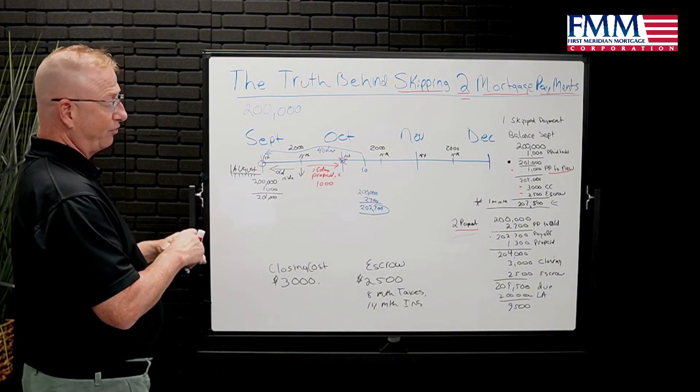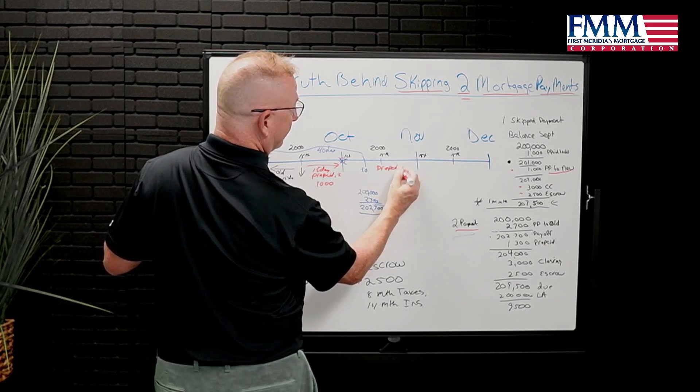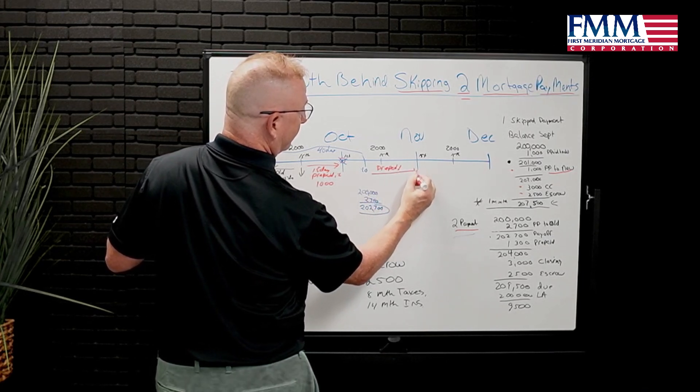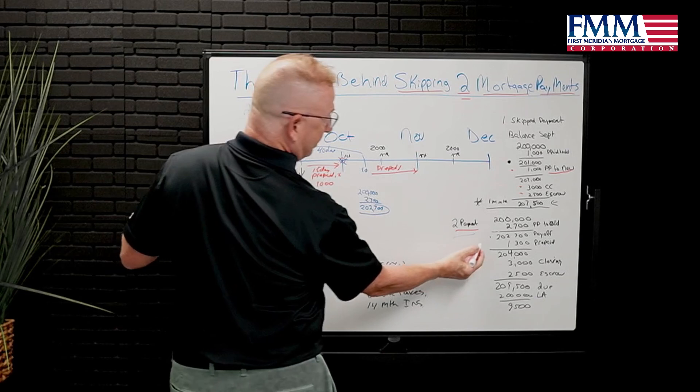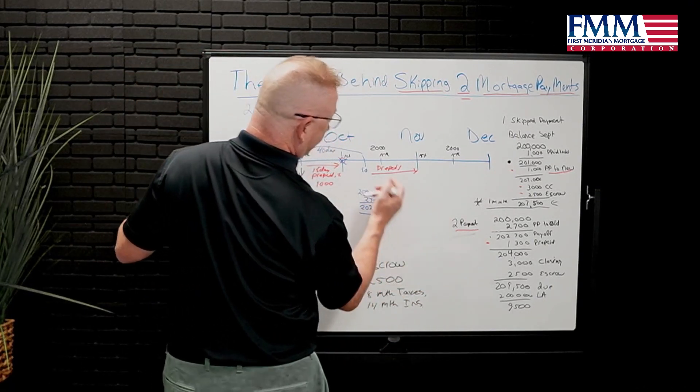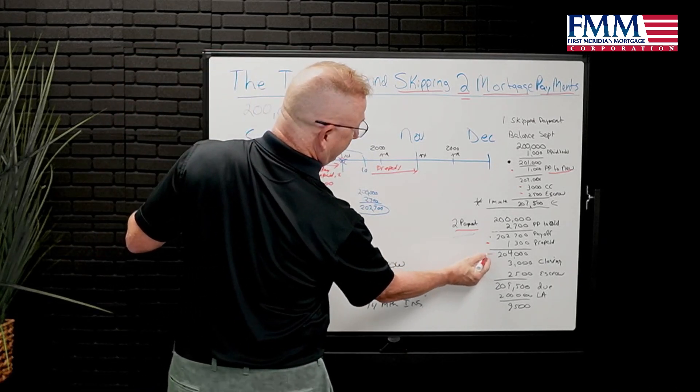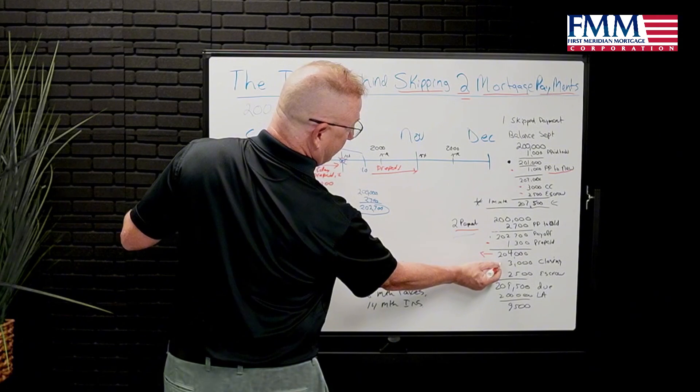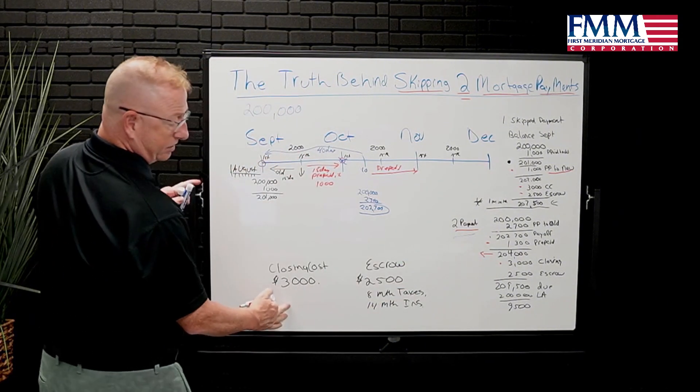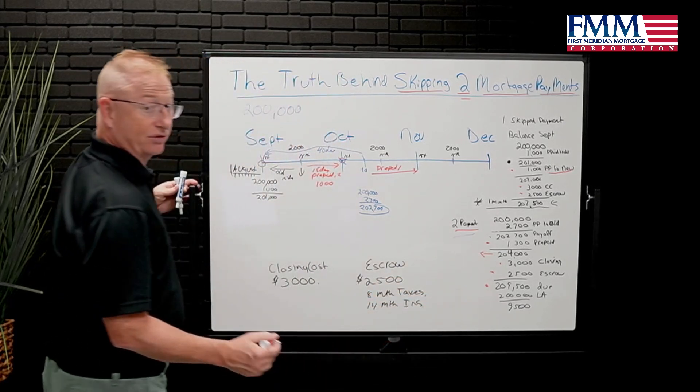Here's your new payoff. Remember, no free lunch. Here's that prepaid to get to the end of the month. So now, $2,000, $2,000, $200,000. $204,000 is your obligation there. Closing costs. Escrows. Now you're at $209,500.